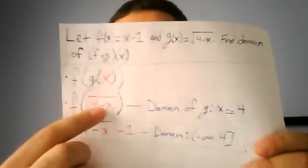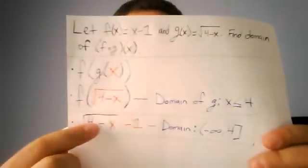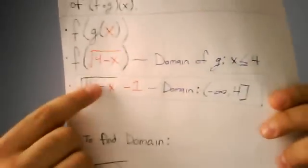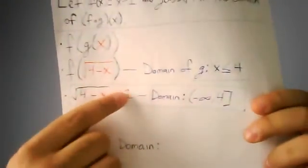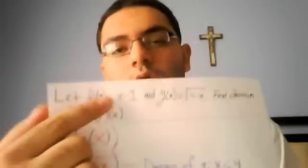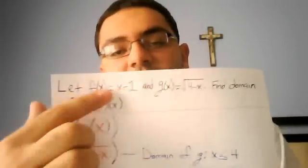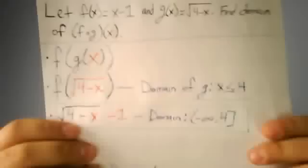Now the second part is you got to plug in f of x into g of x, and it looks like this: square root of 4 minus x, and the minus 1 here we got this from the starting f of x function.